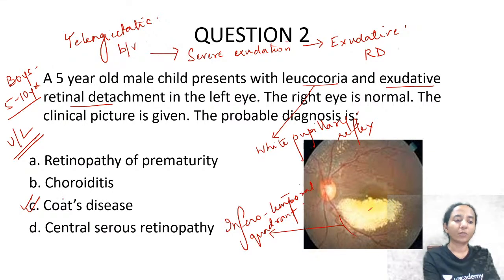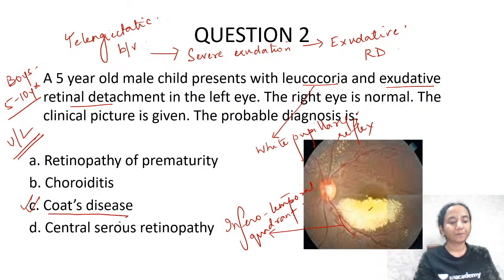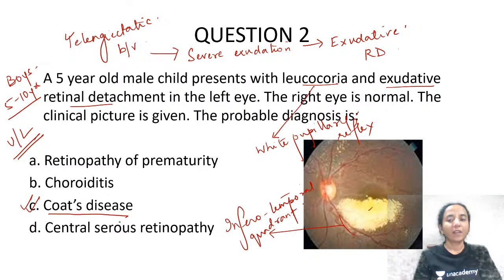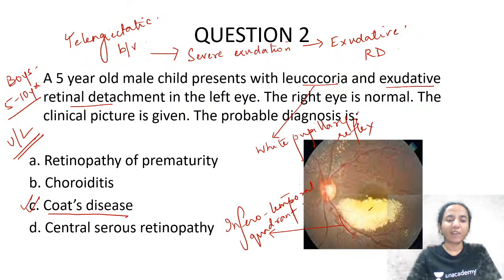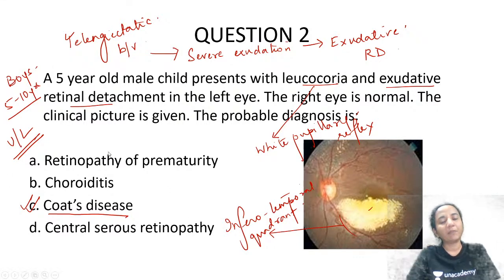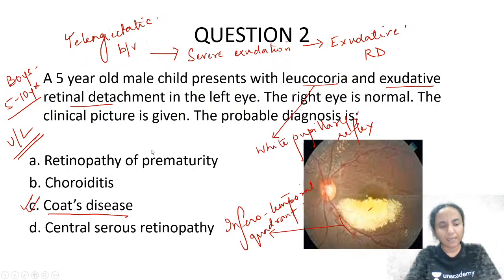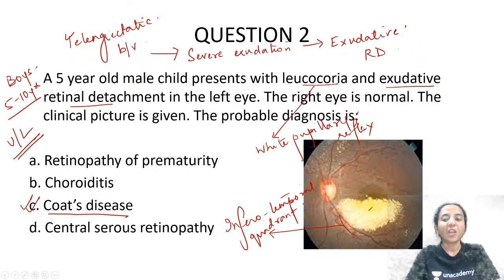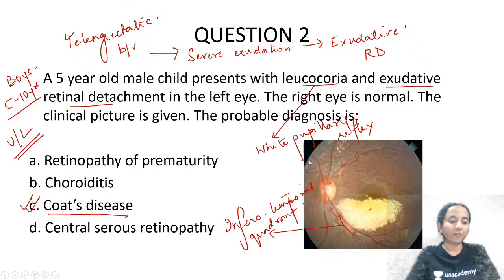All these points, along with the image, give us a diagnosis of Coats disease. This is a question that has been asked many times in the exam — not always with an image but in the form of a clinical case.